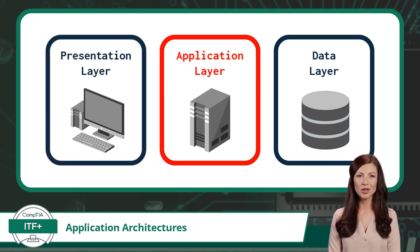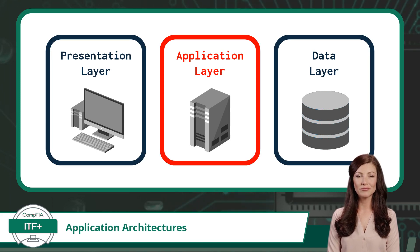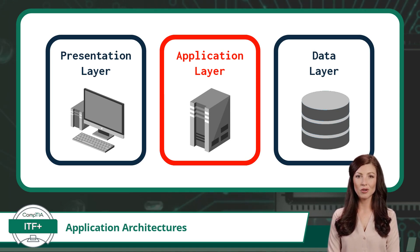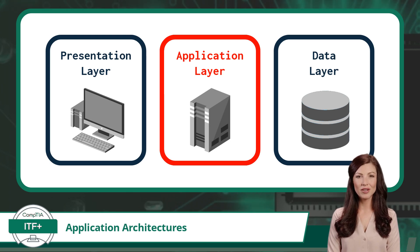Next, there is the Application Layer, also referred to as the middleware or business logic layer. It is the core functional component of an application. It processes and manages user requests received from the Presentation Layer and performs the necessary computations and data manipulations to fulfill those requests. This layer contains the business logic, algorithms, and rules that define how the application functions and processes data. It acts as an intermediary between the Presentation Layer and the Data Layer.